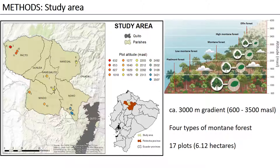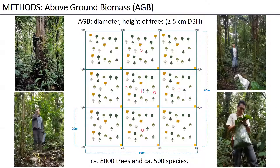To do this, we take measures of the diameter and total height of trees, palms, and tree ferns with at least five centimeters of diameter at breast height. Until now, we have finished three censuses, and we are evaluating the dynamics in 8,000 trees, and we have determined more than 500 species.